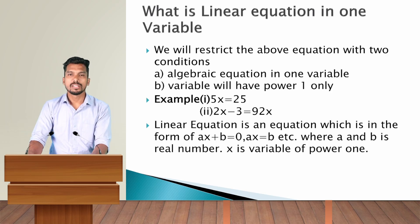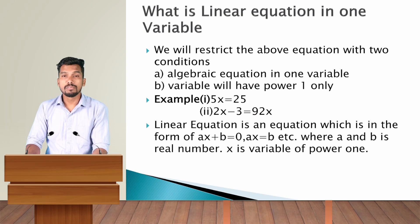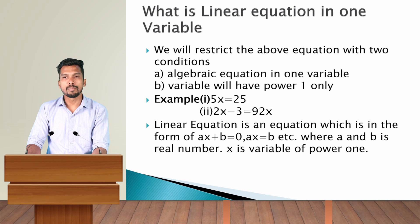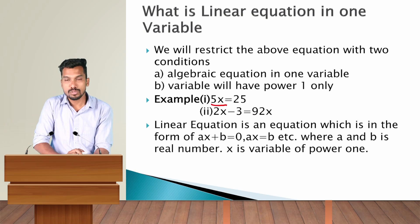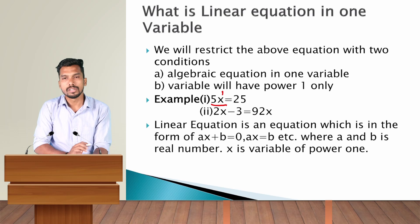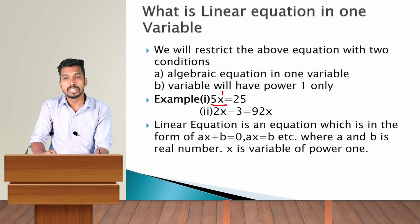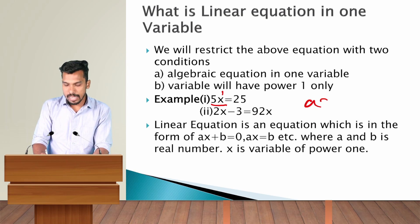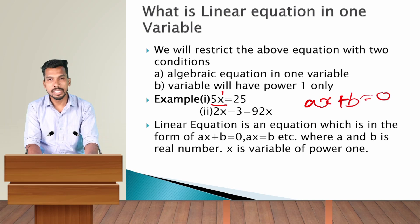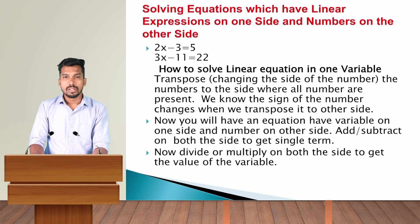Now, what is a linear equation in one variable? We restrict the equation with two conditions: first, it is an algebraic equation in one variable; second, the variable will have a power of one only. For example, 5x equals 25 — we have only one variable x and the power of x is one. The standard form of a linear equation in one variable is ax plus b equals zero.